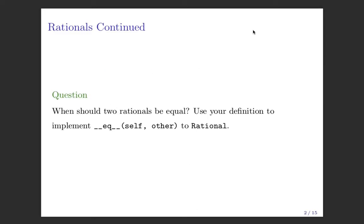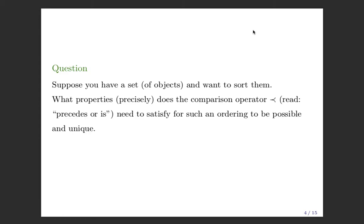The question I want to ask today is: suppose you have a set of objects and want to sort them. What properties precisely does the comparison operator need to satisfy? I'm going to introduce a new symbol — this curly less-than — called 'precedes.' If you sort something 1, 2, 3 — one precedes two, two precedes three. This symbol is used when talking about comparing things in the general sense. What does our operator need to satisfy in order for this sort to be unique?